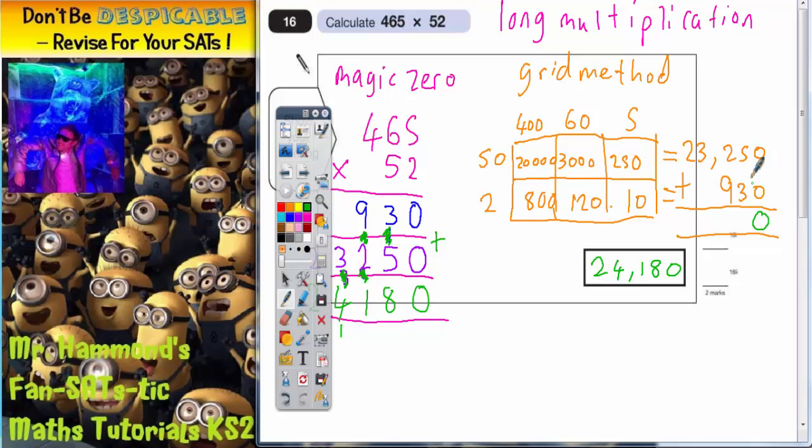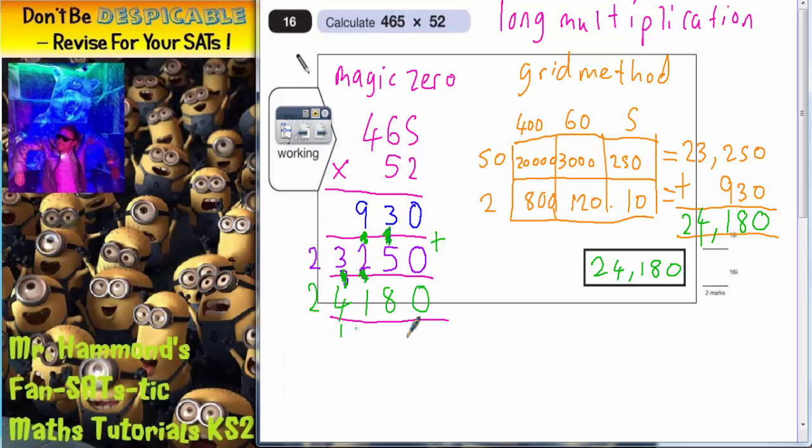So 0 plus 0 is 0. 5 plus 3 is 8. 2 plus 9 is 11. Put your 1 in, carry 1. 3 plus 1 is 4. Then we've got the 2 on its own there, so that's 2. The final answer is 24,180. Now obviously the good news is that that matches what we got down here. Therefore it must be the correct answer.